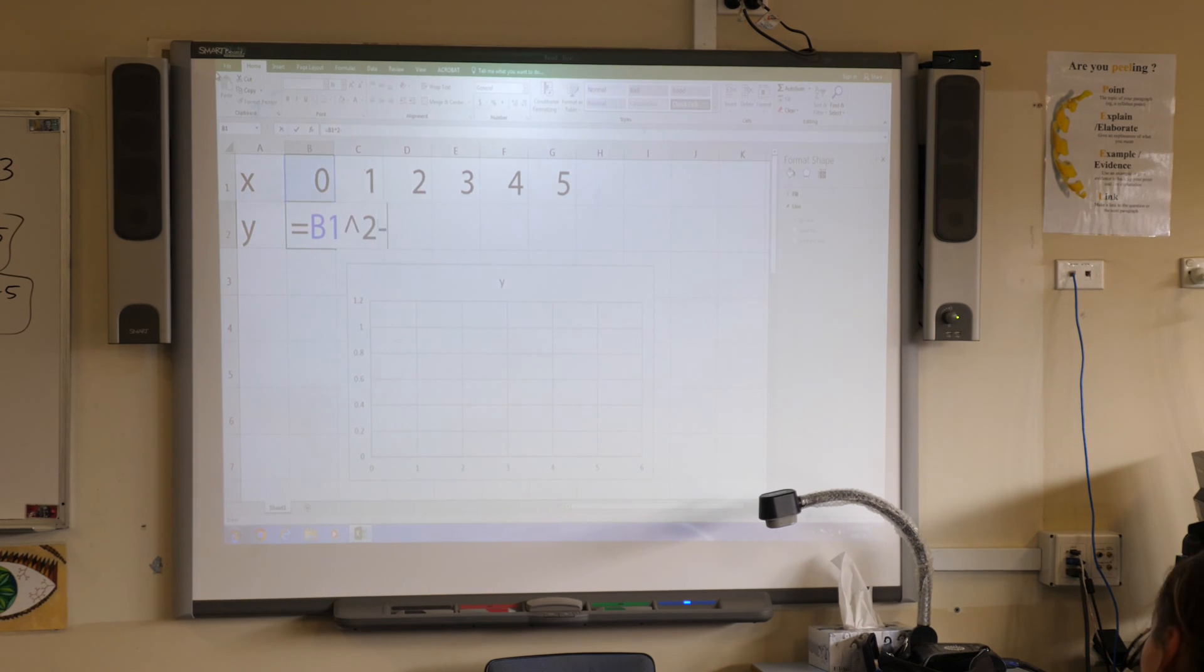And then I minus 2. Do I just click the cell now? No, I have to multiply. There's 2x.